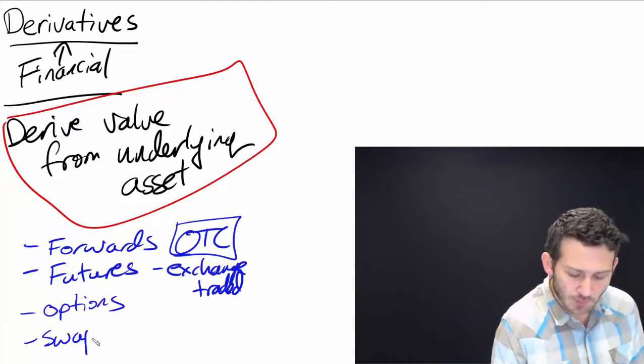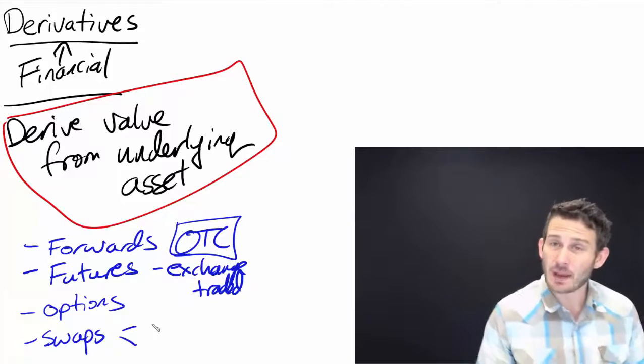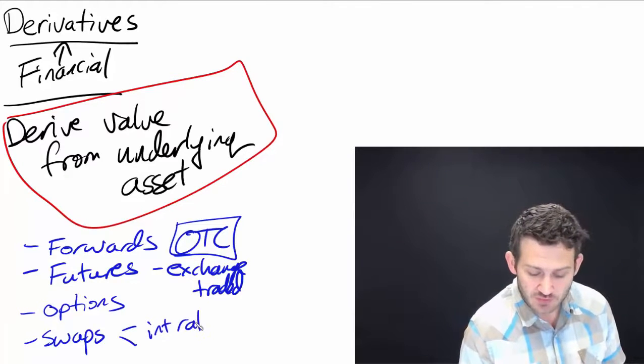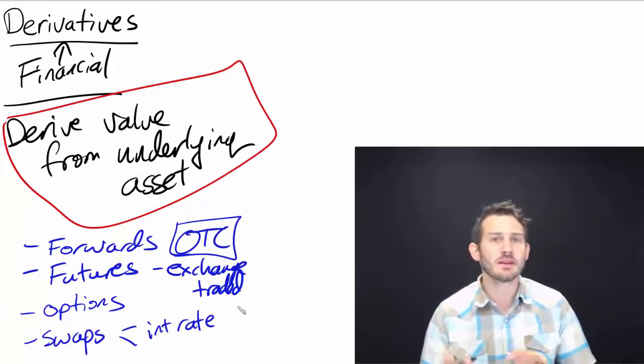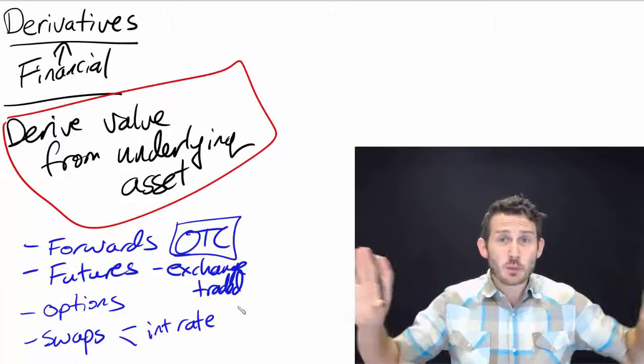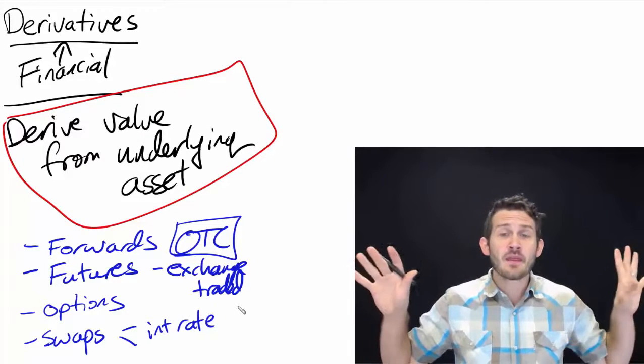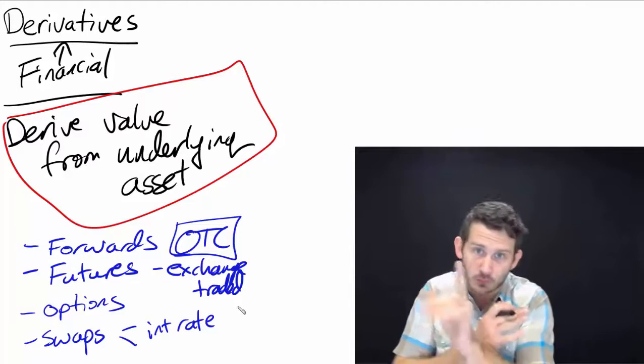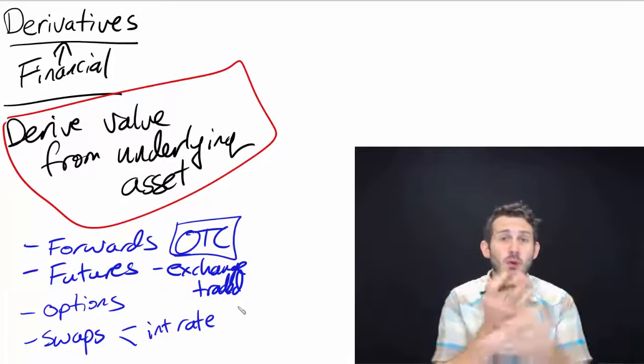The last one are going to be swaps. There are two different types of swaps that are used commonly, the first of which is an interest rate swap. Basically, we take two payments on either side, and then we swap them. I know that's not a great explanation right now, but we'll get into there. But we swap them.